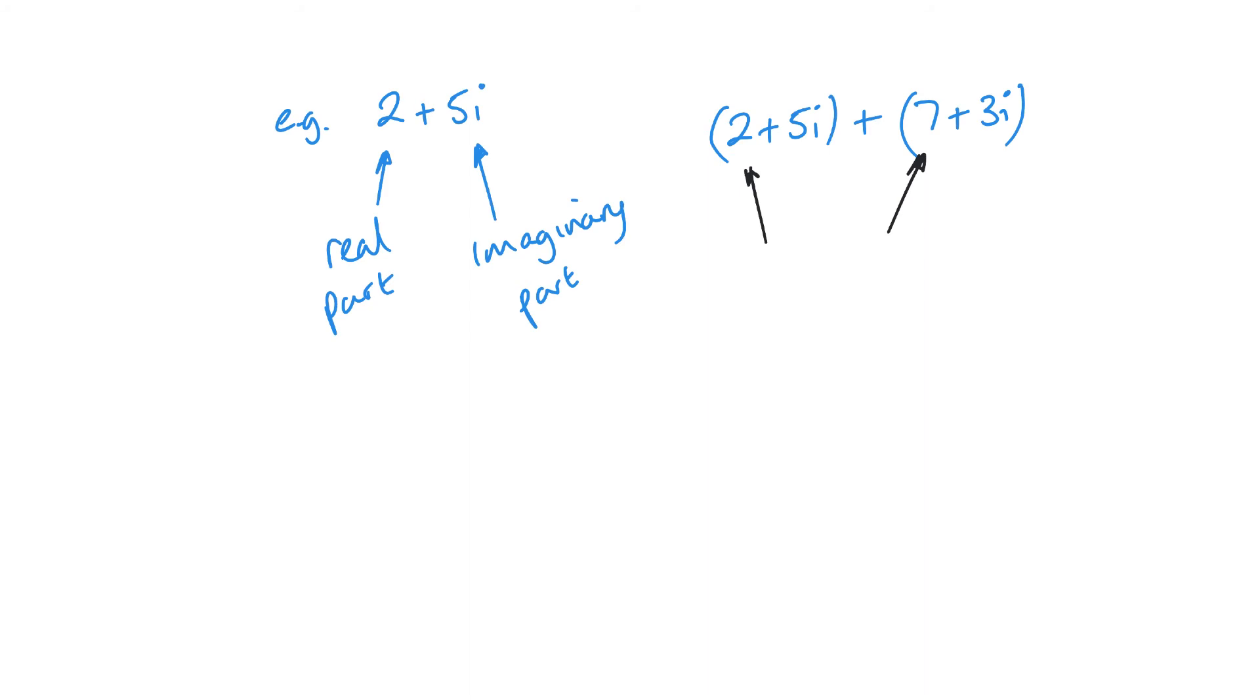What I need to do is I need to add the two real parts separately from the two imaginary parts. So in this case the 2 plus 7 is going to give me 9. That's my 2 plus 7. Then when I'm looking at the imaginary parts, I'm looking at this 5i and this 3i, so I've got my 5i plus 3i. So that's going to give me a positive 8i.